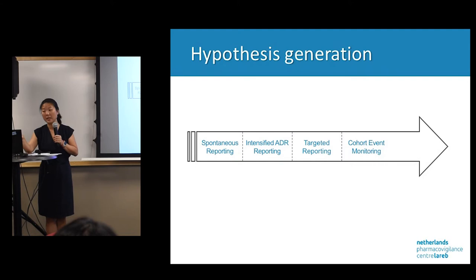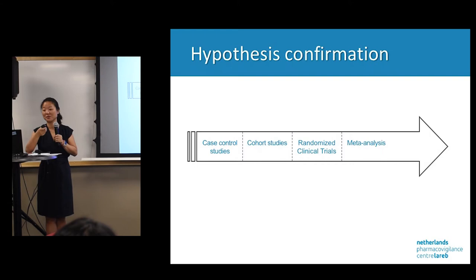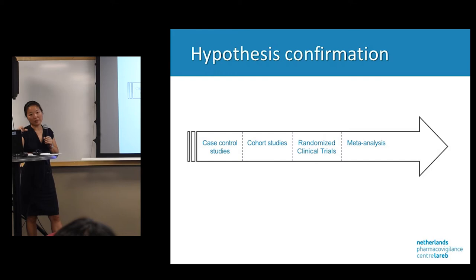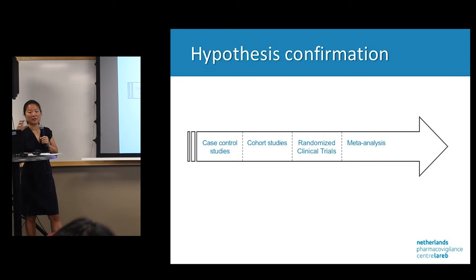In the hypothesis confirmation step you have methods that can really confirm a hypothesis — with these you can get a risk measure out of studies. Case-control studies sometimes have less power than cohort studies, and randomized controlled trials are very strict. Meta-analysis is the highest level of evidence, so there is a ranking in evidence, although for certain questions you only have one option because it's not possible to get the data any other way.